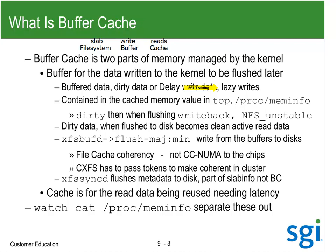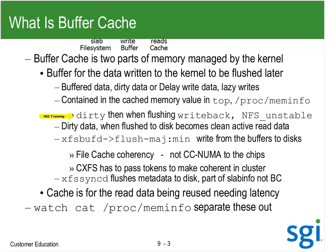Contained in the cache memory value - when we looked at top, it's adding the slab in there, and then proc meminfo. This is dirty data. Once we start actually flushing to disk, it goes to writeback and then NFS unstable. All three - dirty, writeback, NFS unstable - are inconsistent; if I take a service interruption the data is going to be corrupt. But dirty data has not been marked to flush yet. Once we get the delayed write, we're going to mark it to flush and move it to writeback.